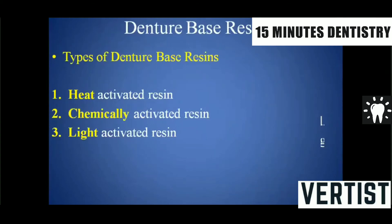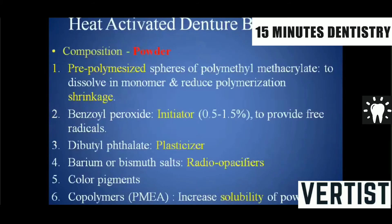There are basically three types of denture base resin depending on the mode of activation: heat-activated resin, chemically activated resin, and light-activated resin. For heat-activated denture base resin, the composition again comes in powder and liquid form. The powder is composed of pre-polymerized spheres of polymethyl methacrylate dissolved in the monomer, which reduces polymerization shrinkage.